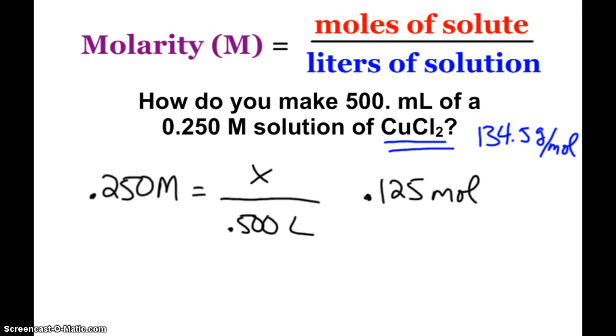So when I take my 134.5 grams per mole, and multiply that by my 0.125 moles, that will give me the grams of the copper 2 chloride that I need to make this solution. Which, 3 sig figs, comes out to be 16.8 grams.